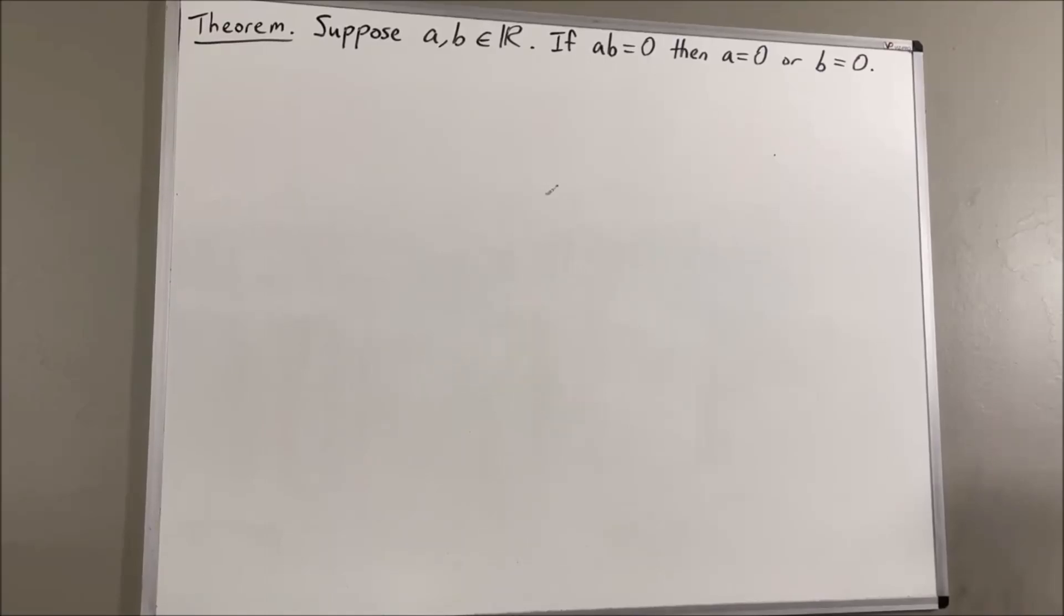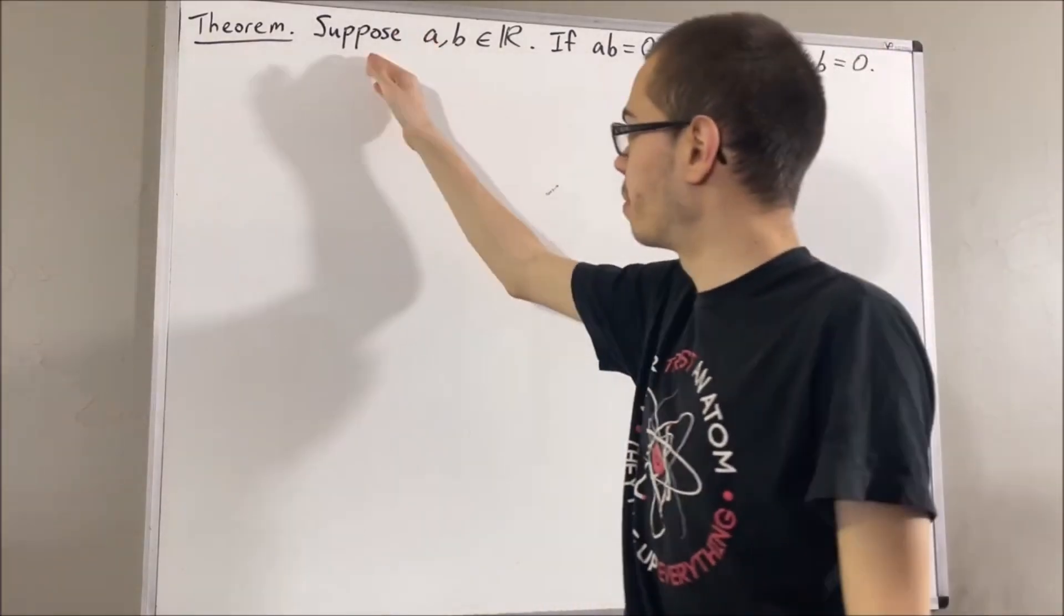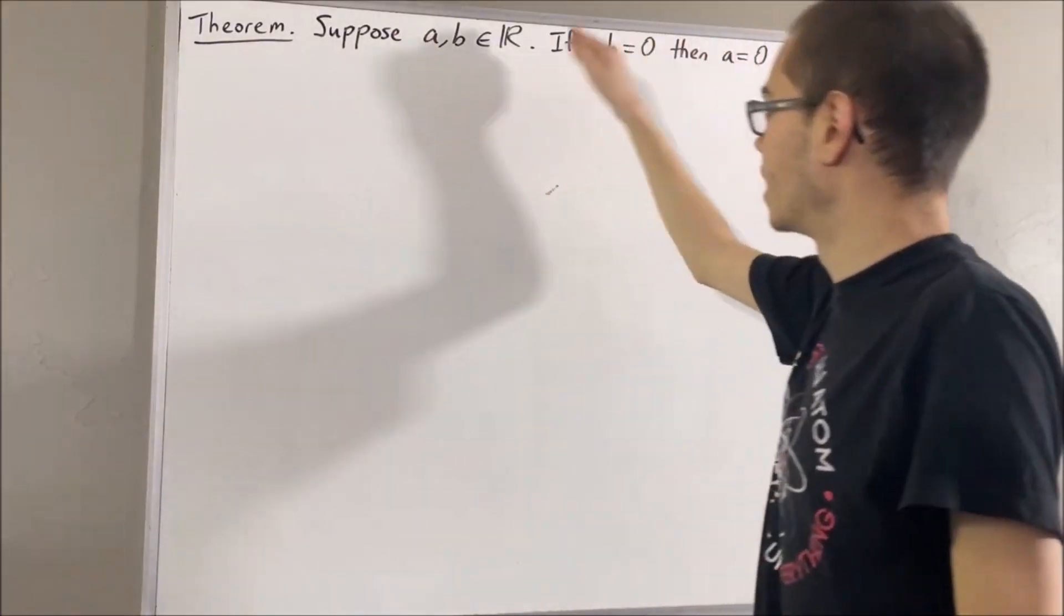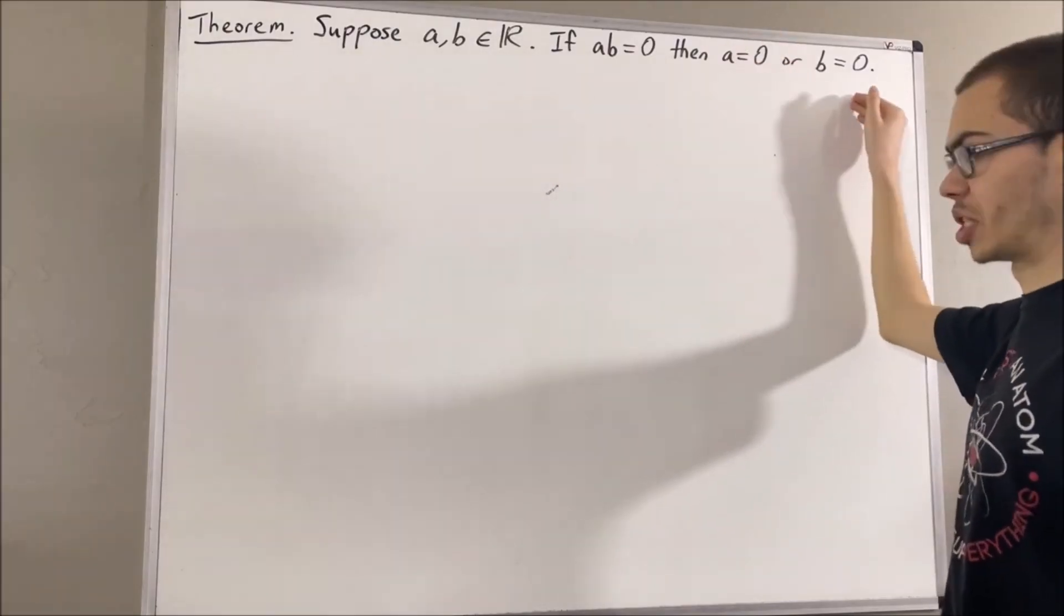Hello! In this video, we are going to prove the following theorem. Suppose A and B are real numbers. If AB is equal to 0, then A is equal to 0 or B is equal to 0.